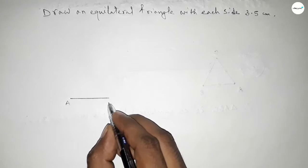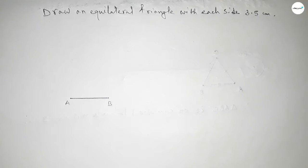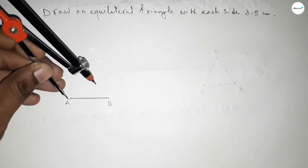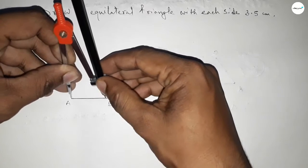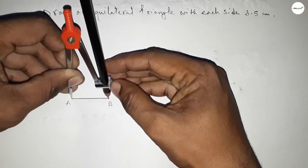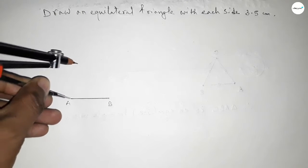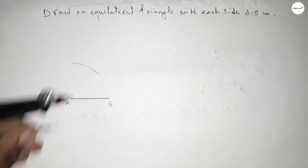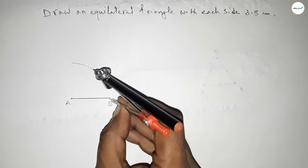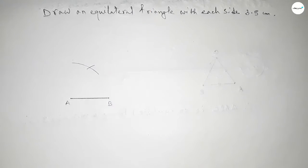So line AB equal to three point five centimeter. Now taking the length three point five centimeter by compass and drawing an arc here with same length and putting the compass here and cut here.